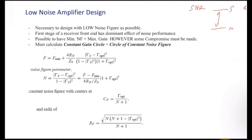For example, let's say you have a 2 dB gap between signal and noise — that is the minimum you allow. If the gap is 1.5 dB, your system will not work. In order to design the low noise amplifier, you need to draw two circles on the Smith chart: the constant gain circle and the circle of constant noise figure.